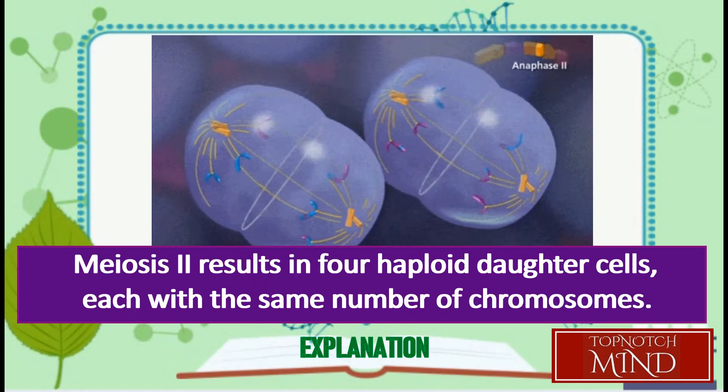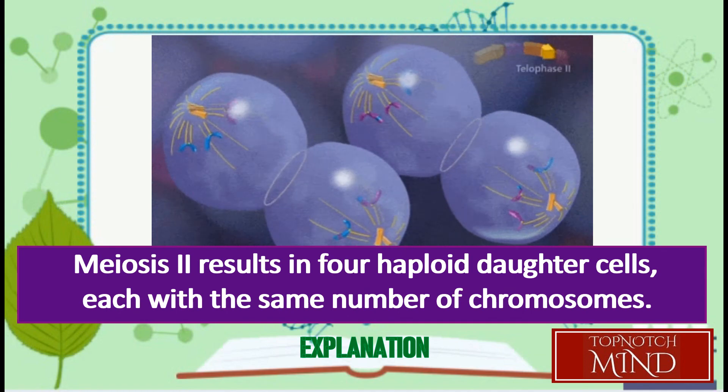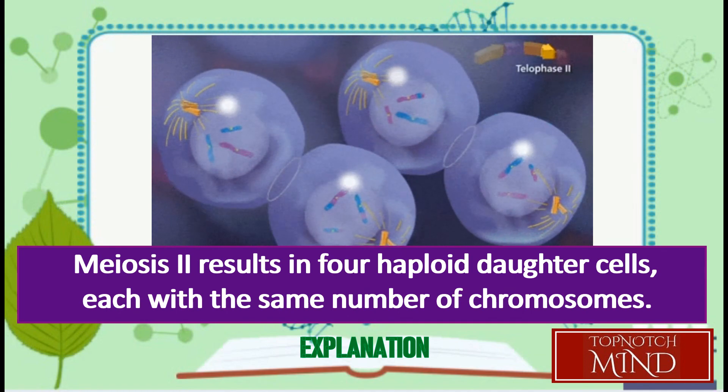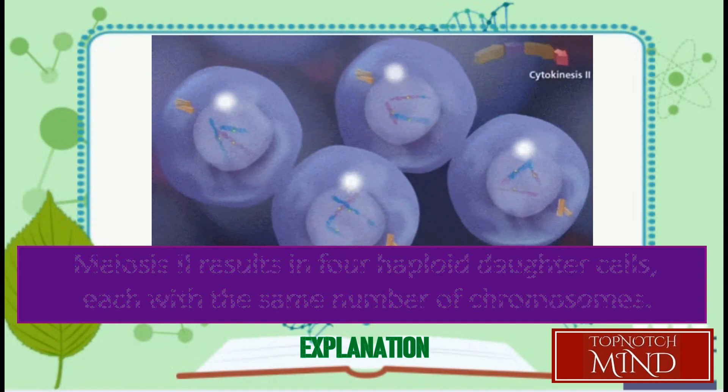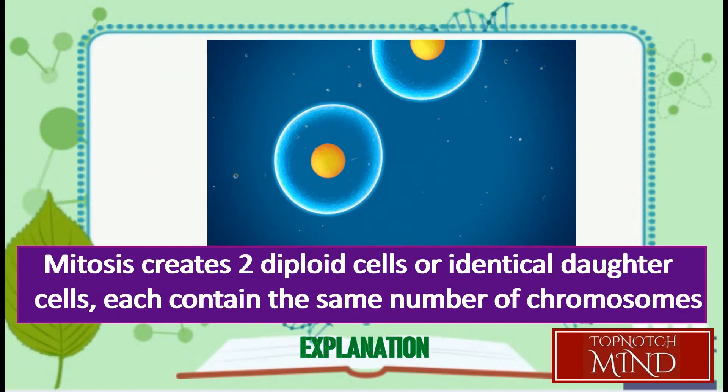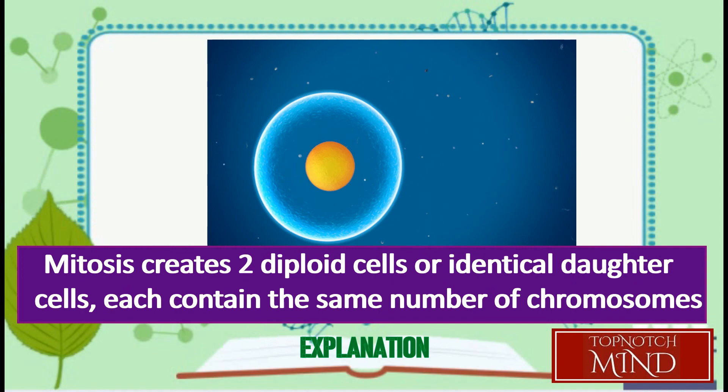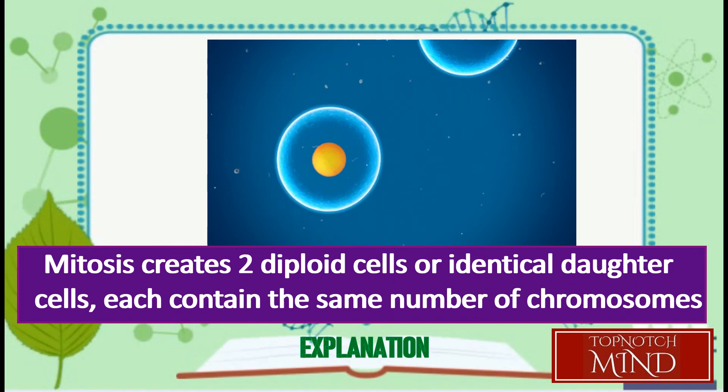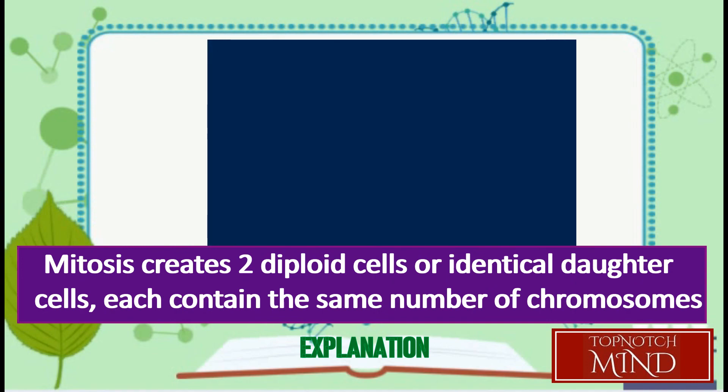Meanwhile, meiosis 2 results in four haploid daughter cells, each with the same number of chromosomes. On the other hand, mitosis creates two diploid cells, or identical daughter cells that each contain the same number of chromosomes as their parent cell.